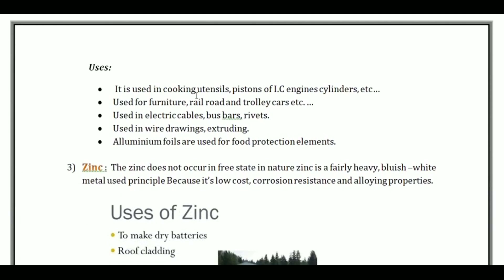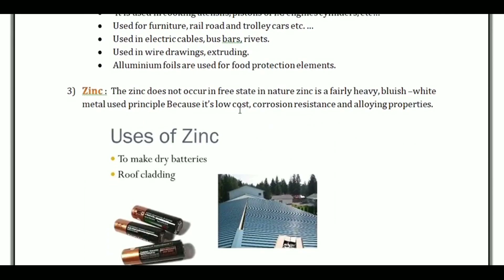Aluminum is used in cooking utensils, pistons of IC engines and cylinders, furniture, railroads and trolley cars, electrical cables, bus bars and rivets, wire drawing and extruding processes, and aluminum foils are used in food protection.